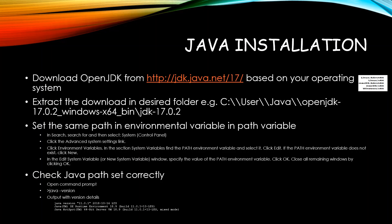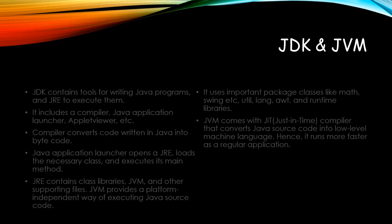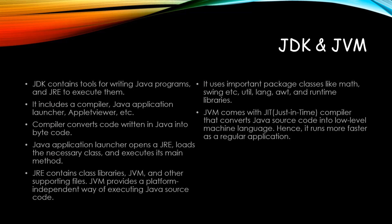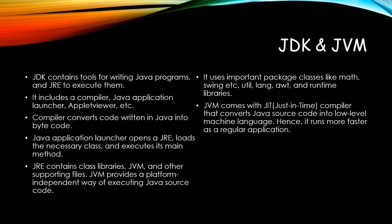JDK is a programming tool while JRE is the execution environment. JDK includes the compiler, the Java application launcher, the applet viewer, etc. The compiler converts the code into Java byte code, and then JRE loads the necessary classes and executes the main method. JRE actually contains the dependent libraries, JVM, and other supporting files.